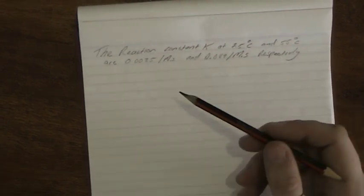Hey guys, I've got a question where the reaction constant K at 25 degrees Celsius and 55 degrees Celsius are 0.0025 per mole per second and 0.049 per mole per second respectively.